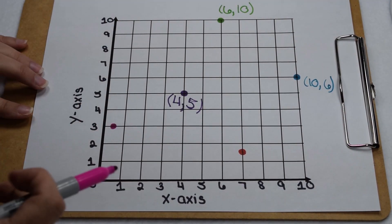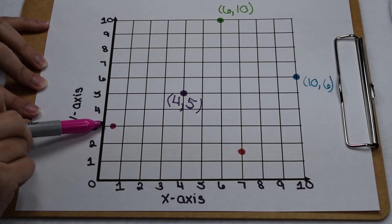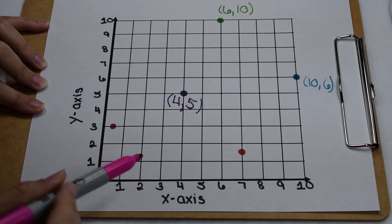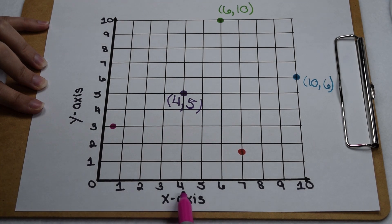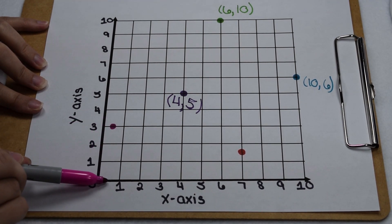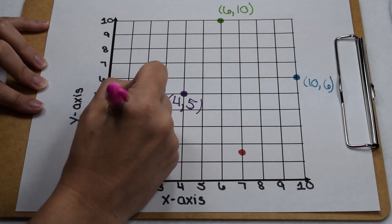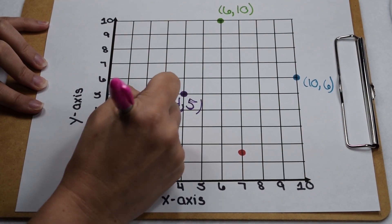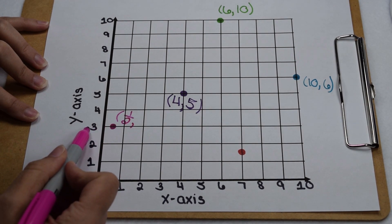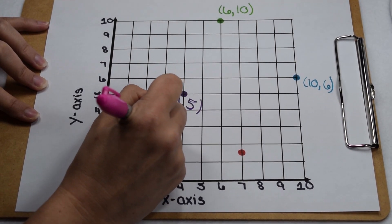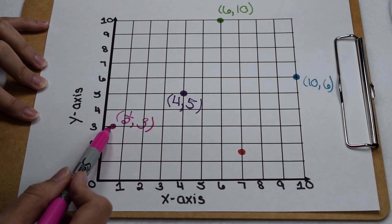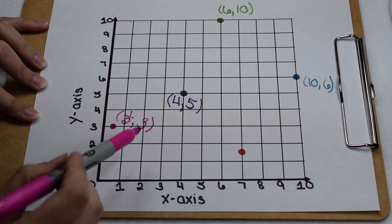Fractions and decimals can also be part of ordered pairs. If we look here at this point, we see that this point is going to fall between 0 and 1. Since the scale on our x-axis is counting by 1s, and this point falls about halfway between 0 and 1, I can estimate that its x-value is going to be 1/2. Coming across on the y-axis, we see it lines up with the 3, so the y-value would be 3. So this point would be represented by the ordered pair (1/2, 3).